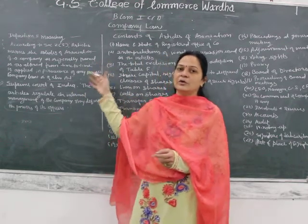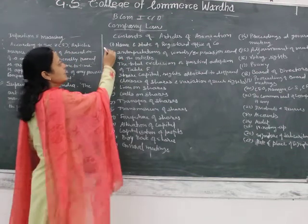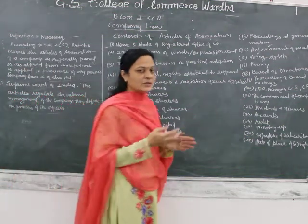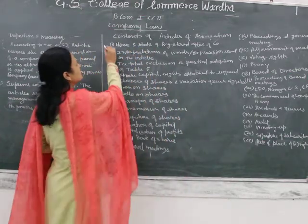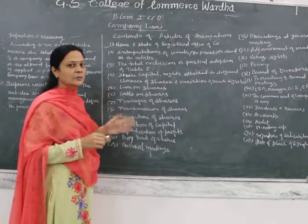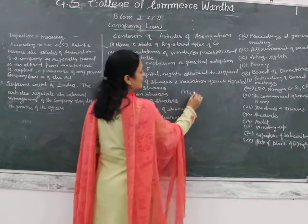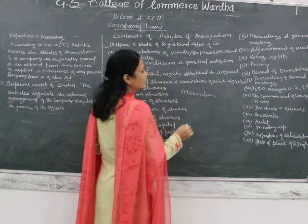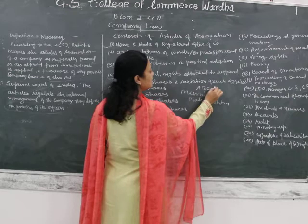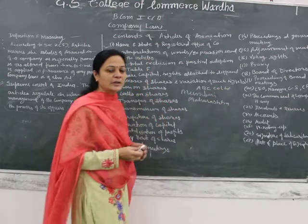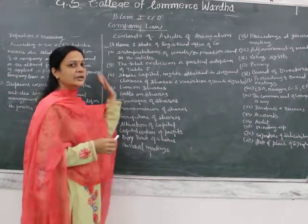Now let us see the contents of articles of association. The first content is the name and state of registered office of the company. As we have seen in memorandum of association, the first clause was the name clause. Similarly, articles of association must state the name of the company and the state of the registered office. For example, if your registered office is in Mumbai, the registered state is Maharashtra, so you mention Maharashtra. You don't have to mention the full address, just the name and the registered state.